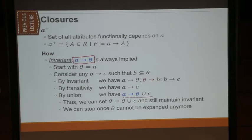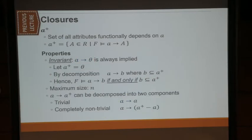From there, you can get the actual algorithm written down. There's a nice property: based on the invariant, any decomposition of A to θ will be implied. You can always have a sequence of things proving it.